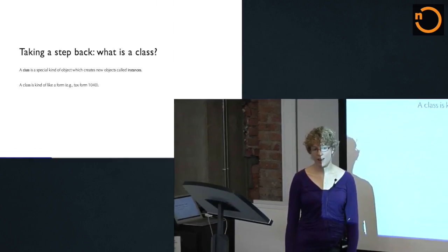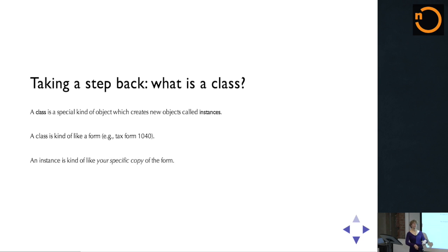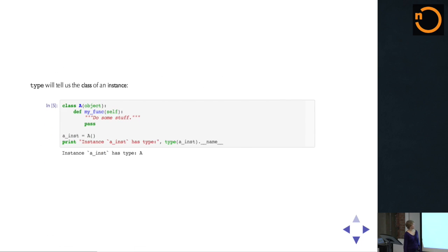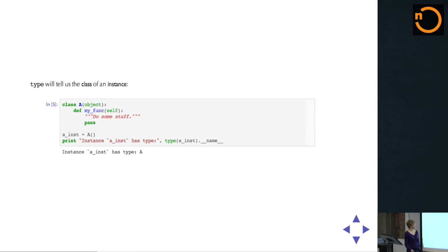To give a real-world example: a class is sort of like a particular government form, a tax form like the 1040. And then an instance would be your particular version of that tax form with all of your information written out on it. We can ask Python what type of object a particular instance is using the type function. Here it'll tell us that ainst is of type A, which is what we'd expect because we created it from A.